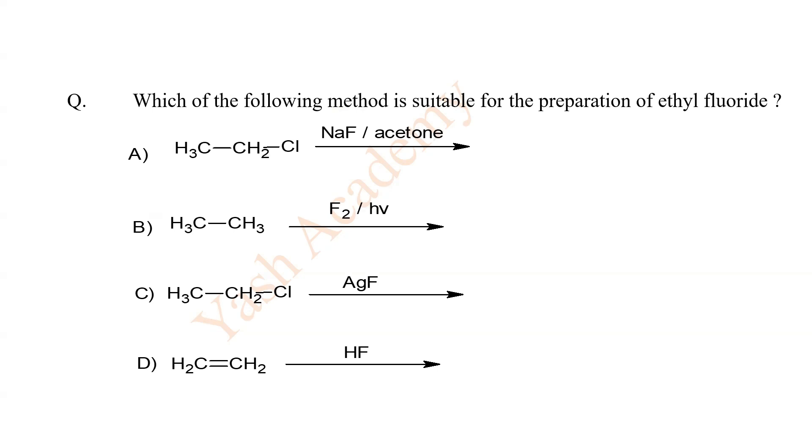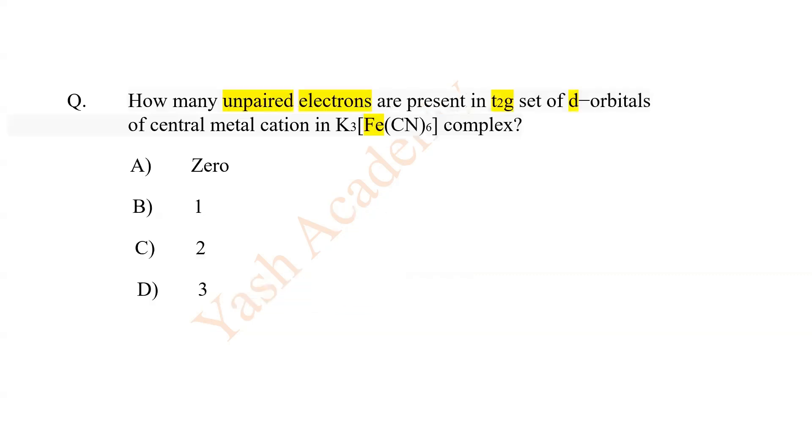Which of the following method is suitable for the preparation of ethyl fluoride? C. CH3CH2Cl plus HGF. How many unpaired electrons are present in T2G set of d orbitals of central metal cation in K3FeCN6 complex? B.